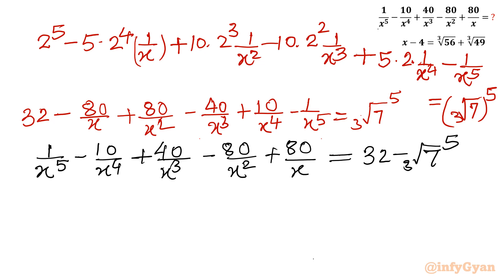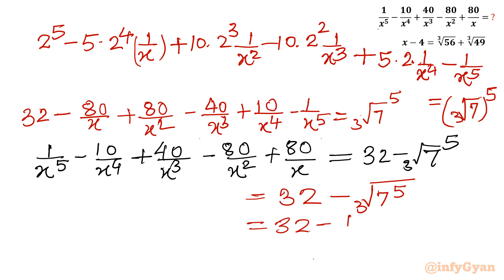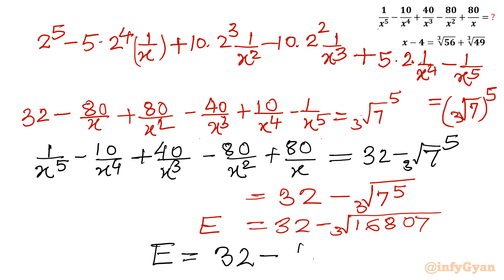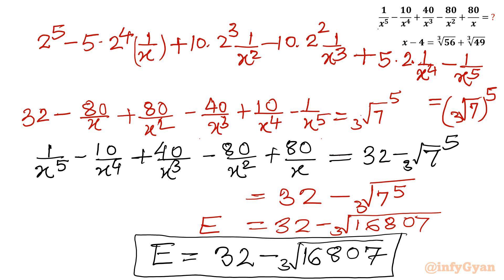We can simplify the right hand side further. The left hand side is our required expression. Using the power rule of exponents, cube root of 7 whole power 5 can be written as 7 power 5 over 3, which equals cube root of 7 to the 5th, or cube root of 16807. So the expression E equals 32 minus cube root of 16807.